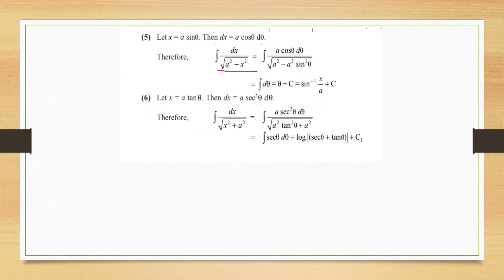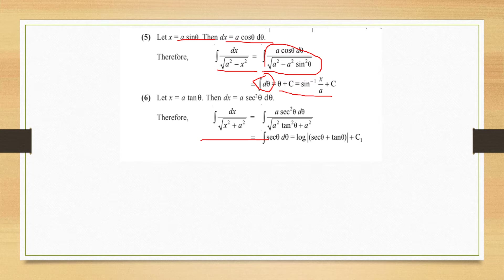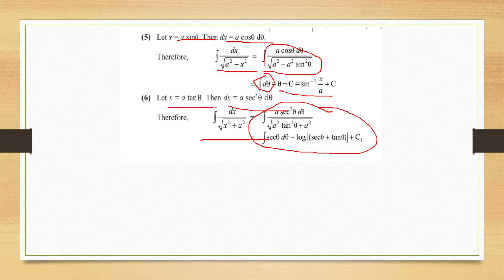For 1/√(a² − x²), put x = a sin θ, dx = a cos θ dθ, so the integral reduces to dθ, giving θ + C = sin⁻¹(x/a) + C. For the last formula (1/√(x² + a²)), again put x = a tan θ. As in formula 4, this integrates to log|sec θ + tan θ| + C₁, and after back-substitution gives log|x + √(x² + a²)| + C.